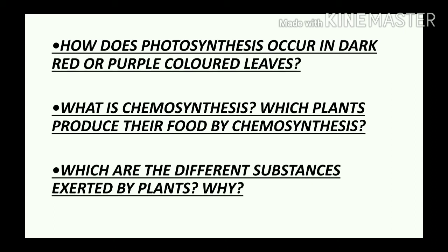Second question: what is chemosynthesis, and which organisms produce their food by chemosynthesis? Using carbon dioxide, methane, hydrogen, or hydrogen sulfide as a source of energy and producing food in this process is called chemosynthesis. It means food is prepared by using chemicals, not by using sunlight. Autotrophic green plants cannot perform chemosynthesis. Only bacteria or microbes residing in areas where sunlight does not reach perform chemosynthesis. However, chemosynthetic microbes are not plants.